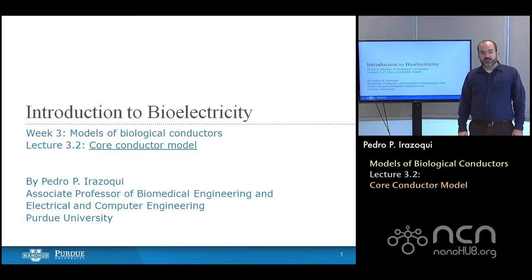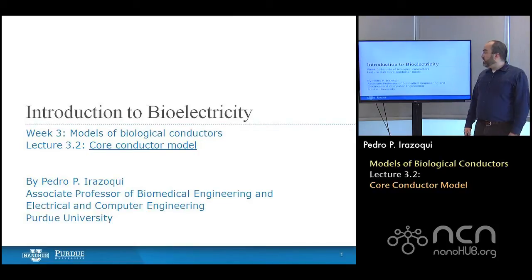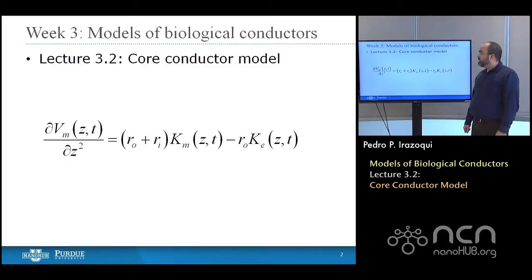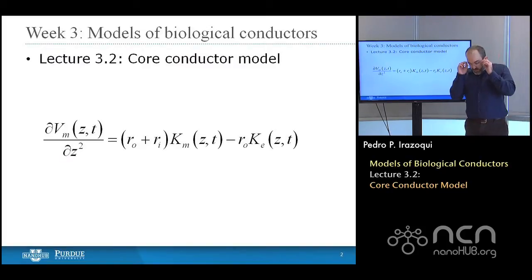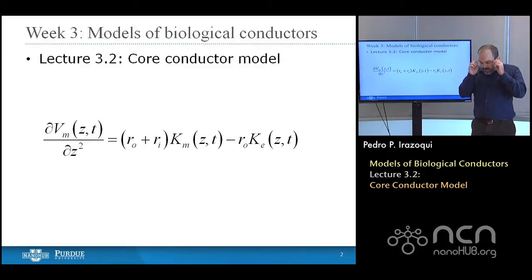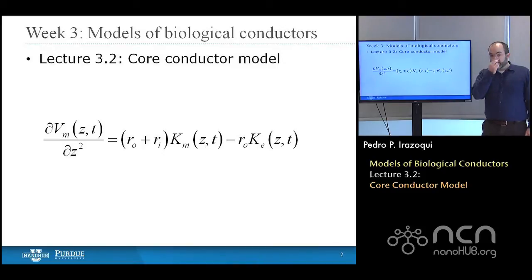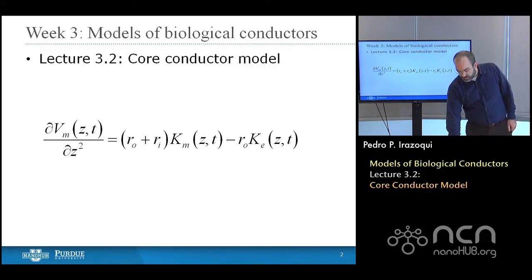Hello and welcome back to NanoHub U's introduction to bioelectricity. We are in week three, talking about models of biological conductors. In this lecture we'll describe the very first of the models and the foundation for all subsequent models in this course. This model describes the relationship between voltages and currents inside and outside of a cell. It is called the core conductor model, and it was not initially developed to describe neurons at all.